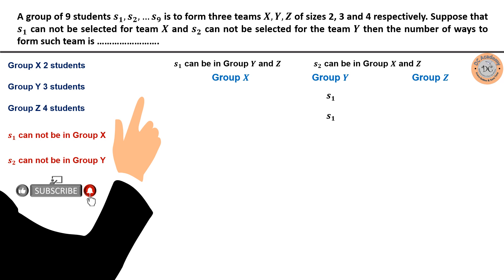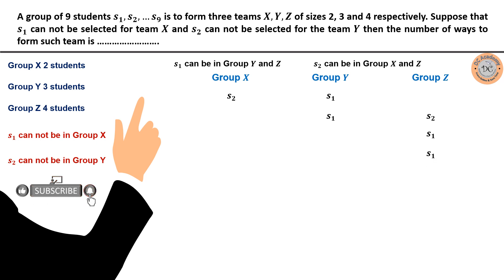We identify four cases. Case 1: S1 in group Y, S2 in group X. Case 2: S1 in group Y, S2 in group Z. Case 3: S1 in group Z, S2 in group X. Case 4: S1 and S2 both in group Z. These are all the valid placement possibilities for S1 and S2.